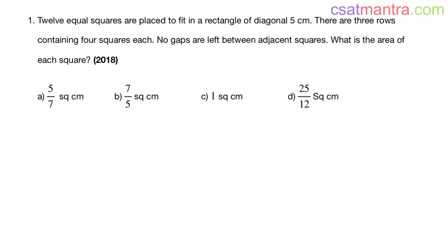12 equal squares are placed to fit in a rectangle of diagonal 5 cm. There are 3 rows containing 4 squares each. No gaps are left between adjacent squares. What is the area of each square? This is a 2018 question.